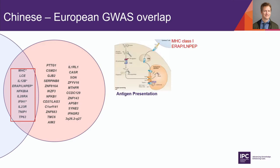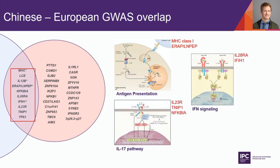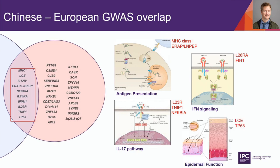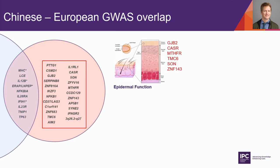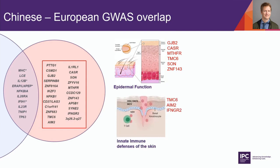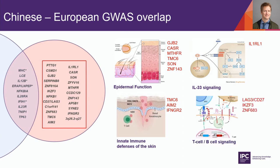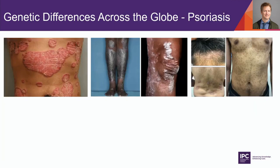Looking at what's shared — the 10 genetic risk loci across these divergent populations — the shared biological processes include antigen presentation, interferon signaling, IL-17 pathways, and epidermal function. This is the core unit tying psoriasis across different ethnic groups. The loci identified only in the Chinese population so far show epidermal functions somewhat different from Caucasians, innate immune defenses of the skin, IL-33 signaling, and T-cell/B-cell signaling — similar but with some differences.